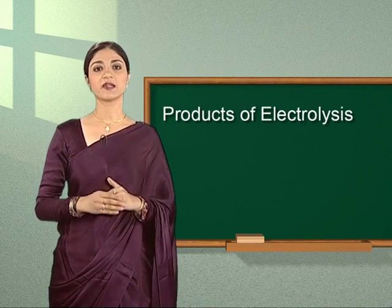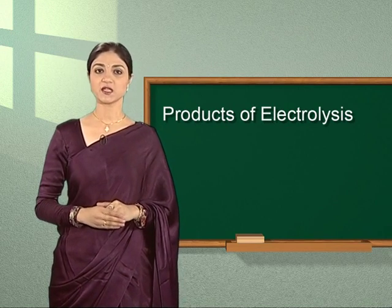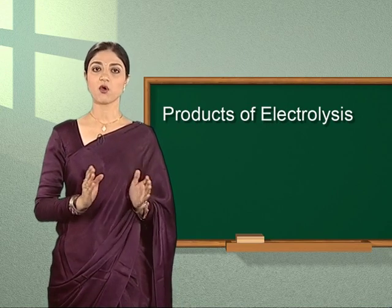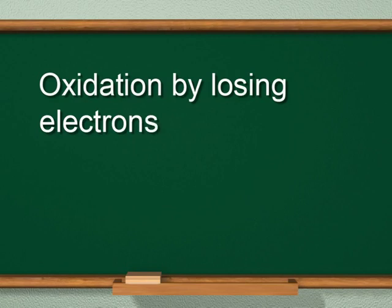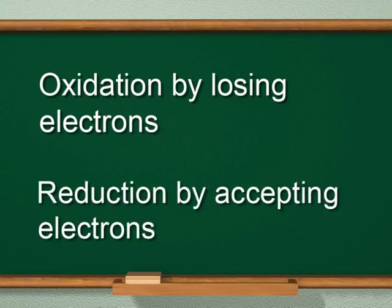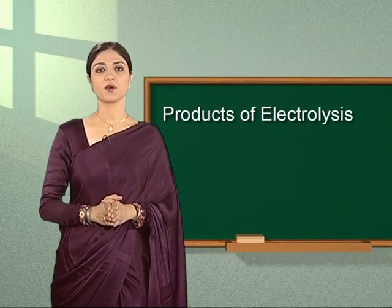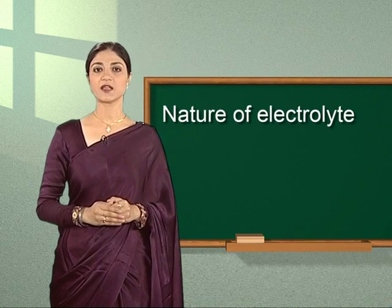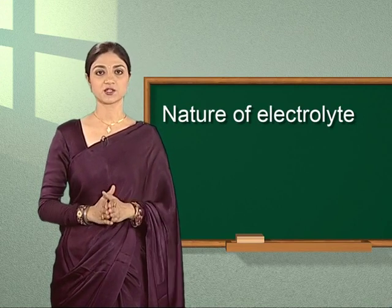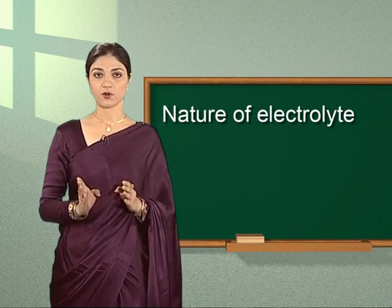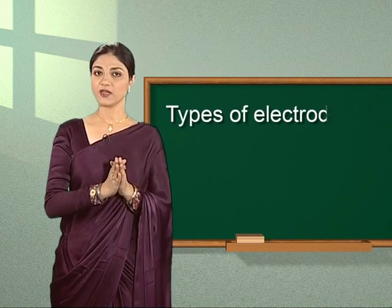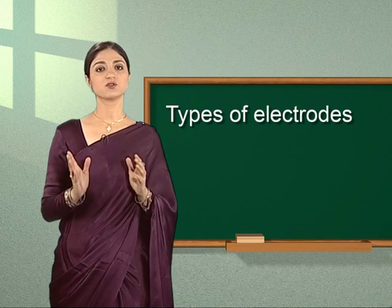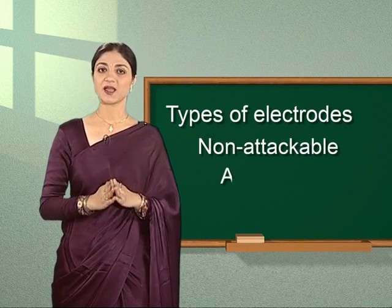Electrolysis causes dissociation of the electrolyte into its respective ions, which move towards oppositely charged electrodes where they undergo either oxidation by losing electrons or reduction by accepting electrons. The products of electrolysis depend on a number of factors. The first is the nature of the electrolyte, since electrolytes take part in the redox reaction and their nature will influence the products formed at the respective electrodes. The second factor is the type of electrodes used.